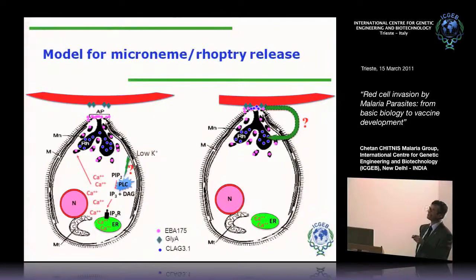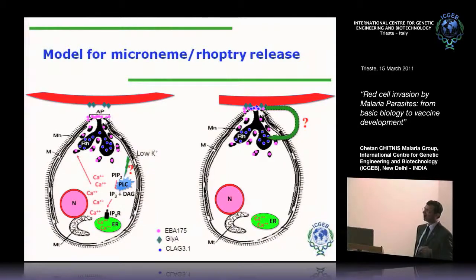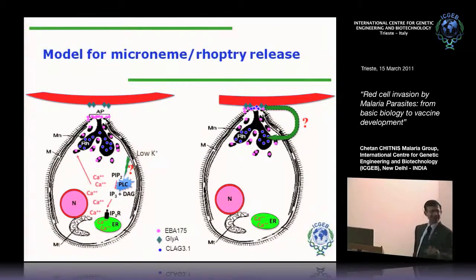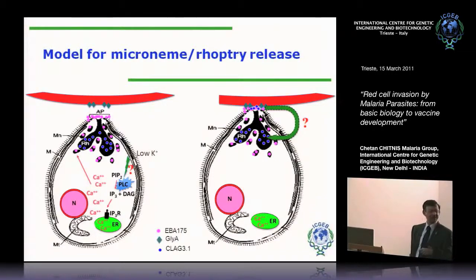This has opened up a new area of work for the lab. We are now trying to understand how the potassium signal is transduced, how the increase in calcium leads to microneme release, and what are the pathways for triggering rhoptry release. If you understand these pathways, if there are unique things in these pathways, those could potentially become drug targets — because if you block microneme and rhoptry release, you will not get invasion, and you will block growth of the parasite.